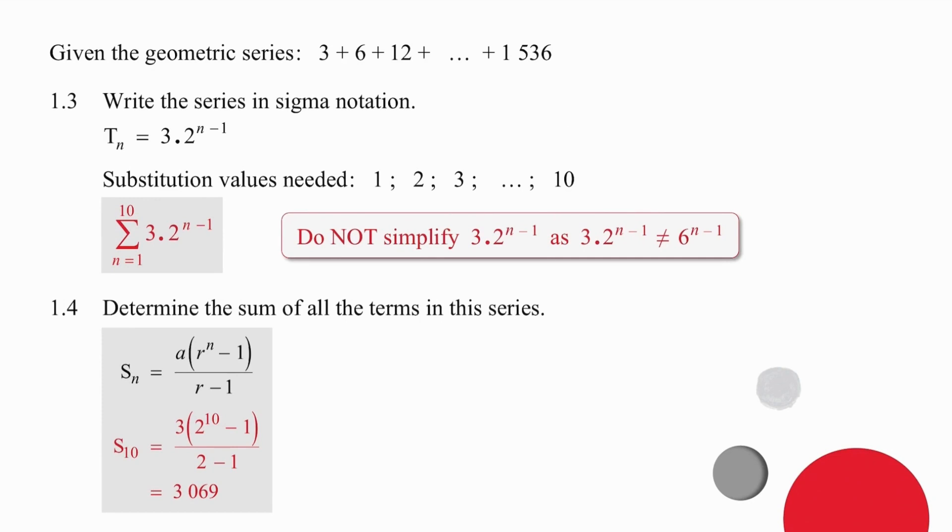In question 1.3, we need to write the series in sigma notation. We know that there are 10 terms, so we set it up with n going from 1 to 10, and all we have to do is write down the formula for the general term.